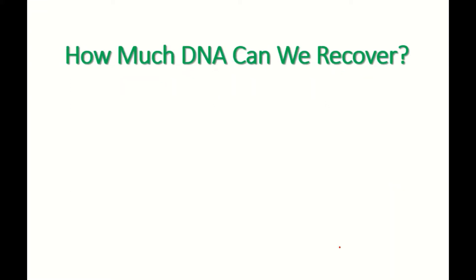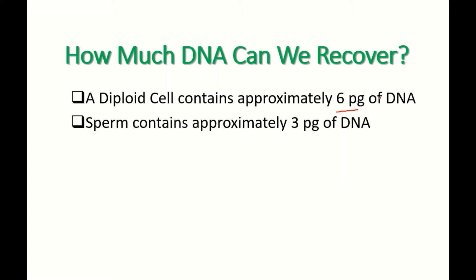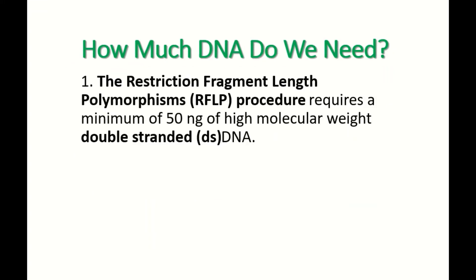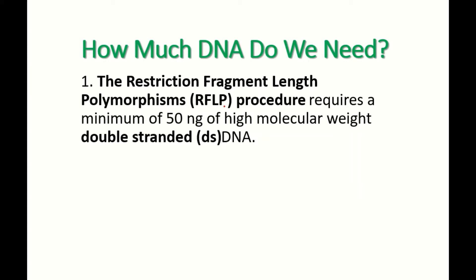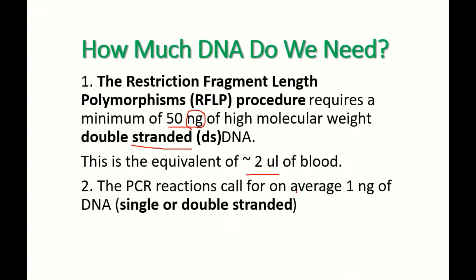How much DNA can we recover? A diploid cell contains about 6 picograms of DNA, while a sperm contains 3 picograms. An average white blood cell — we know we have 5 to 10 times 10 to the power of 6 cells per milliliter of blood. Therefore, theoretically the recovery of DNA per microliter of blood is around 30 to 60 nanograms. For RFLP (Restriction Fragment Length Polymorphism) procedures, we require 50 nanograms of double-stranded DNA, equivalent to approximately 2 microliters of blood.